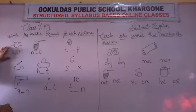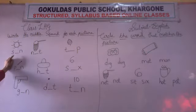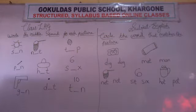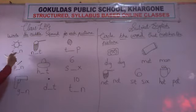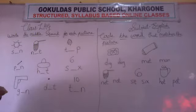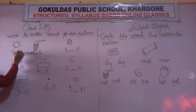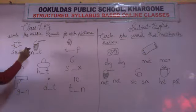Let us start. Which picture is this? Sun. Sun. So, which sound? The sound of U. Which letter you will write here? U. Sun.